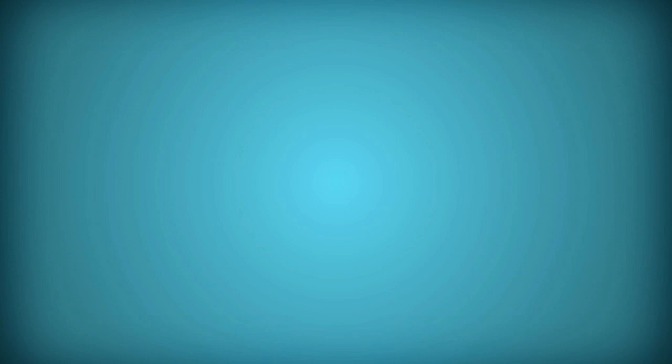Isaac and Rebekah had twin boys. One was named Jacob and the other was named Esau. And even though they were twins, Esau was born first, so he was called the firstborn son.